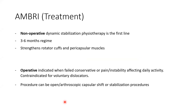Treatment for MDI is mainly non-operative as first line — usually a three to six month regime — strengthening the rotator cuff and periscapular muscles. Surgery is indicated when conservative management fails and pain and instability affect daily activities. Contraindication for surgery is voluntary dislocation — patients who can voluntarily dislocate and relocate their shoulder are not indicated for surgery. Procedure can be done using open or arthroscopic capsular shift.